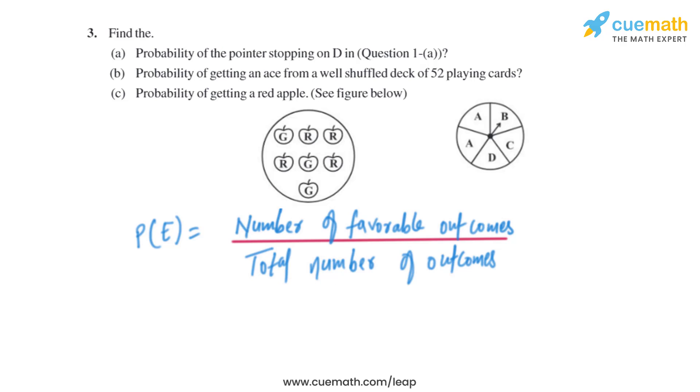Let's start with part (a): probability of the pointer stopping on D. As we can see, there is only 1 D, so the number of favorable outcomes is 1. Now we need to find the total number of outcomes.